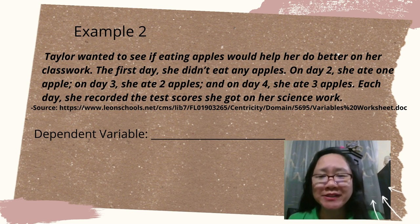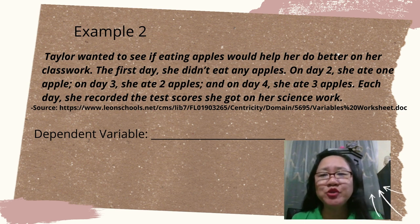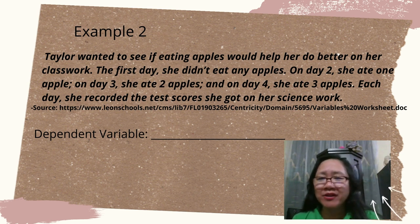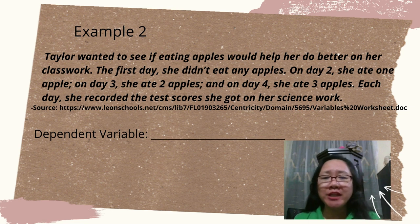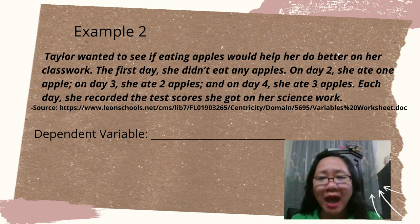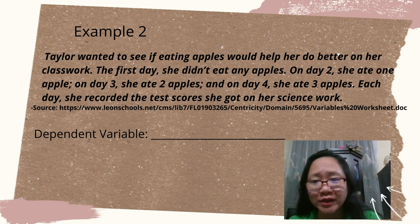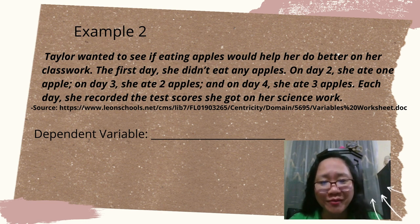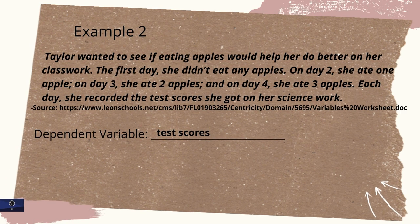Let's have example two. Taylor wanted to see if eating apples would help her do better on her classwork. The first day, she didn't eat any apples. On day two, she ate one apple. On day three, she ate two apples. And on day four, she ate three apples. Each day, she recorded the test score she got on her science work. Can you identify the dependent variable? The dependent variable is test score, because test score is a variable that is tested and measured based on the number of apples eaten.